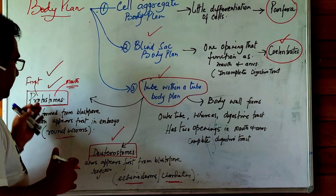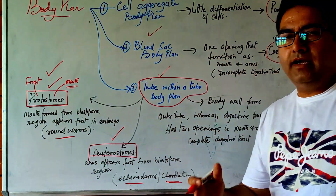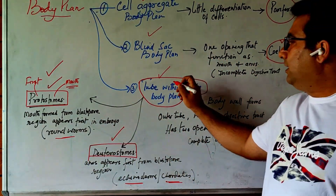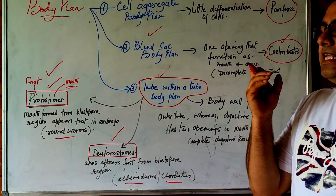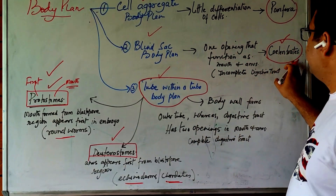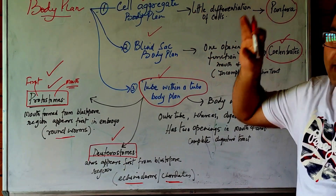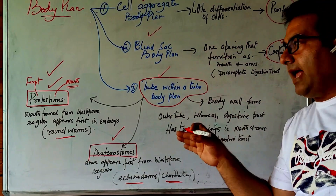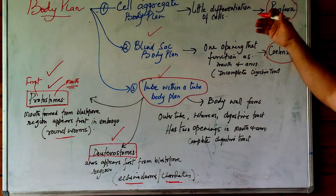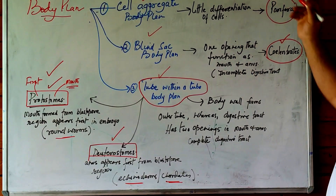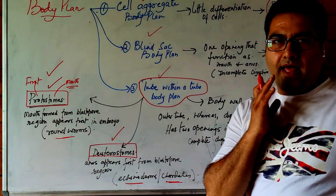Roundworms, echinoderms, and all chordates have the tube within a tube body plan because they have both a mouth and an anus. Cnidarians have the blind sac body plan with only one opening. Earlier organisms such as Porifera have little differentiation of cells and are classified under the cell aggregate body plan.